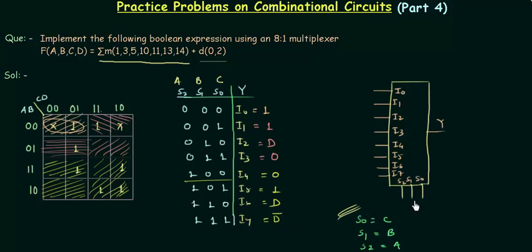So it's a very simple way to implement. And you can see we are having the implementation of this Boolean expression using 8 to 1 mux. This is C, this is B, this is A. And the first input is 1. The second input is 1 again. The third input is D. And the fourth is 0, fifth is 0, sixth is 1, seventh is D and eighth is D complement. In this way we have implemented this function and Y is F. So this is all that we have to do in this problem.